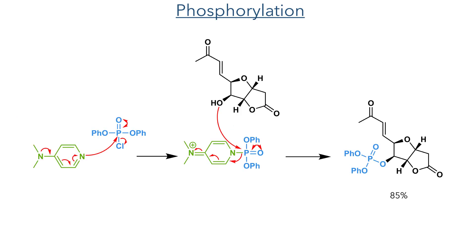Taking this compound forward, the hydroxyl group was then phosphorylated. DMAP first attacks diphenylchlorophosphate, forming a more activated electrophile that is then attacked by the hydroxyl group, regenerating the DMAP catalyst. This formed the target in an 85% yield.